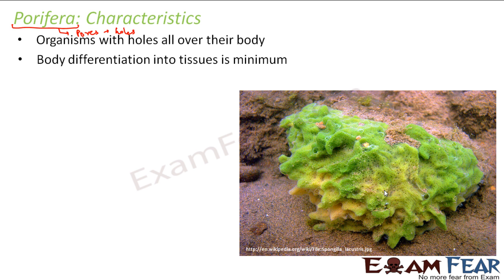How do they perform different functions? In order to survive, ingestion has to happen, food should be digested, energy should be utilized, and unnecessary things should be excreted. These organisms have different types of cells which perform various functions like digestion and ingestion of food, secretion of skeletal fibers, and nutrient transportation.